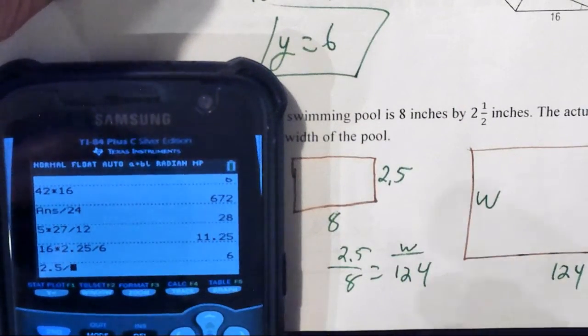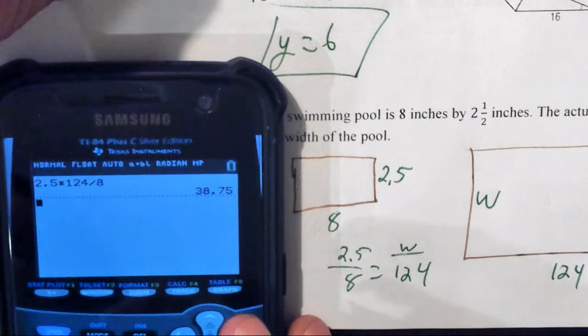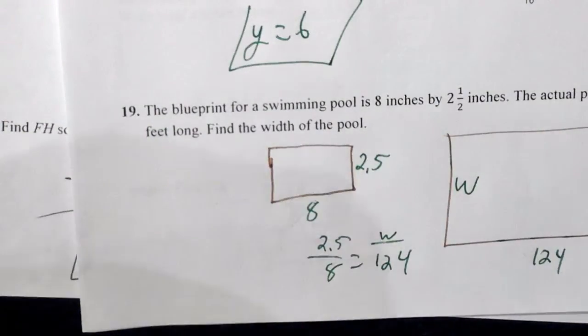2.5 divided by 8... Sorry. 2.5 times 124 divided by 8 equals 38.75 feet wide.